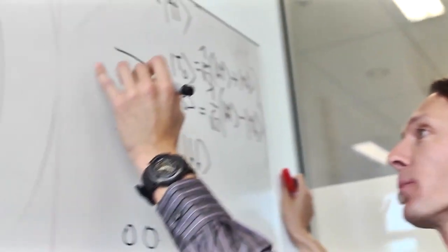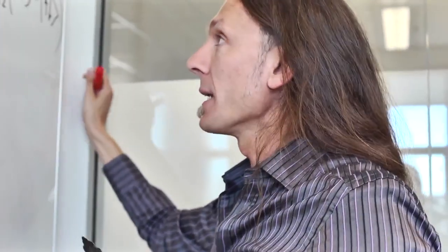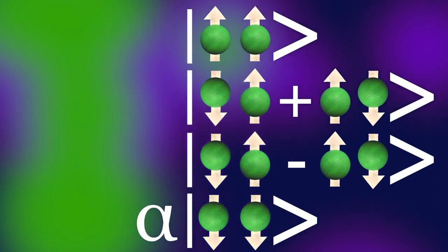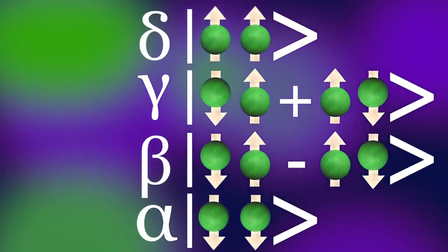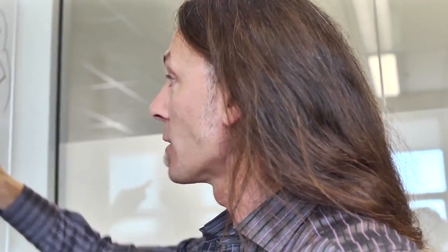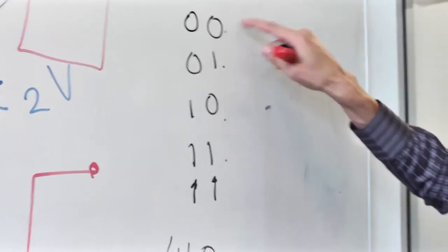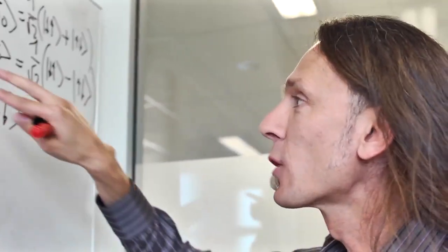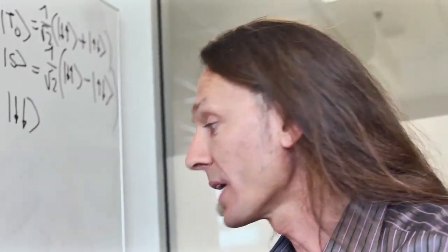Here instead, quantum mechanics allows me to make a superposition of each one of these four states. So I can write a quantum mechanical state that is some coefficient times this, plus some coefficient times that, plus some coefficient times that, plus some coefficient. So to determine the state of this two-spin system, I need to give you four numbers, four coefficients. Whereas in the classical example of the two bits, I only need to give you two bits. So this is how you understand why two qubits actually contain four bits of information.